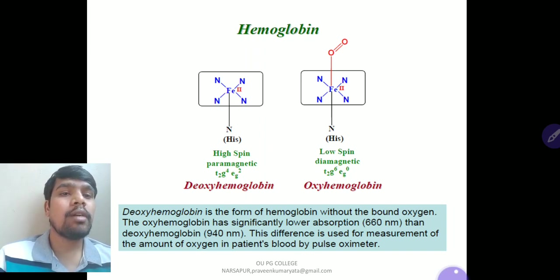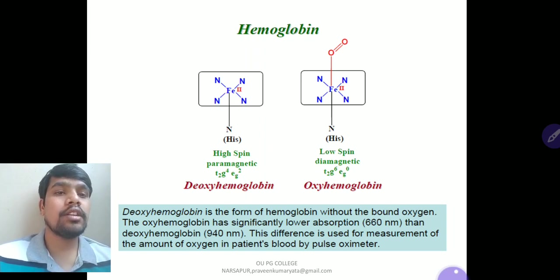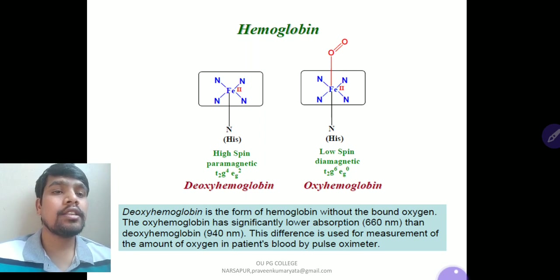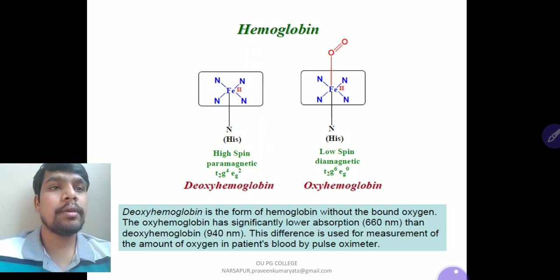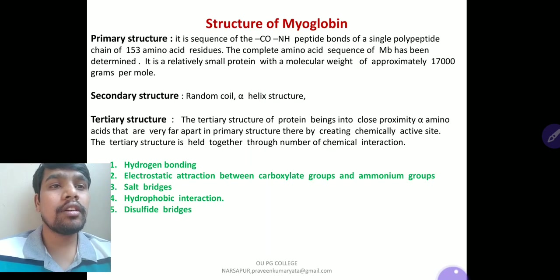Deoxyhemoglobin is the form of hemoglobin without bound oxygen. Oxyhemoglobin has a significantly lower absorption around 660 nanometers, whereas deoxyhemoglobin absorbs at 940 nanometers. This difference is used to measure the amount of oxygen in a patient's blood by a pulse oximeter — the device clipped to the finger in ICUs — which determines the partial pressure and oxygen saturation being inhaled and exhaled by the patient, as observed by doctors.